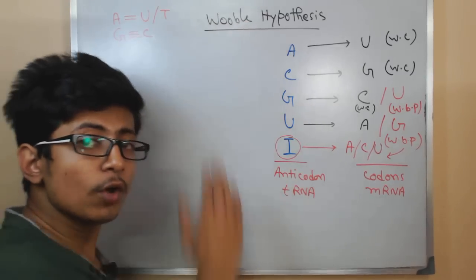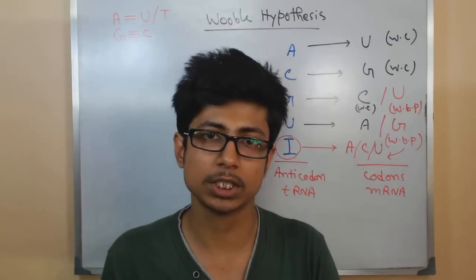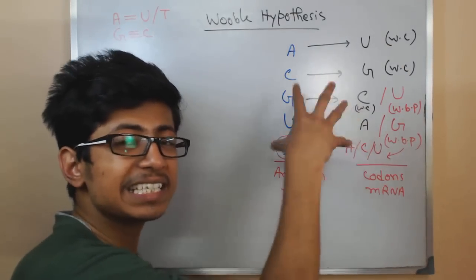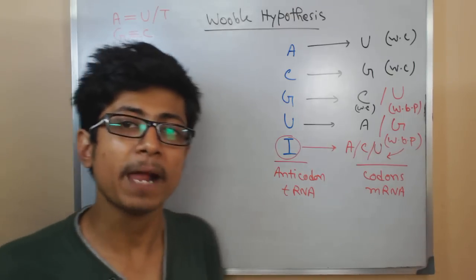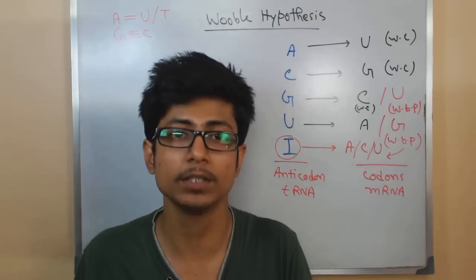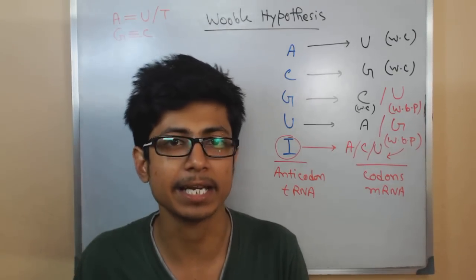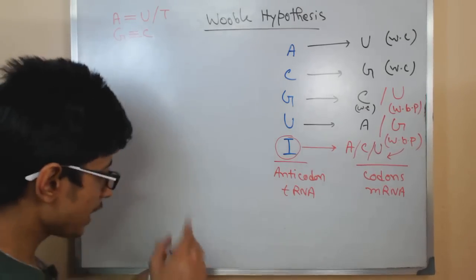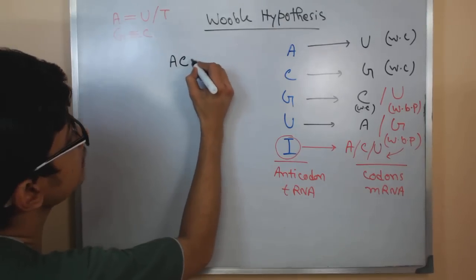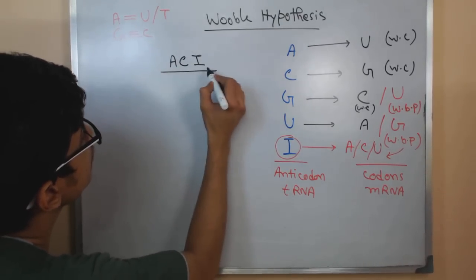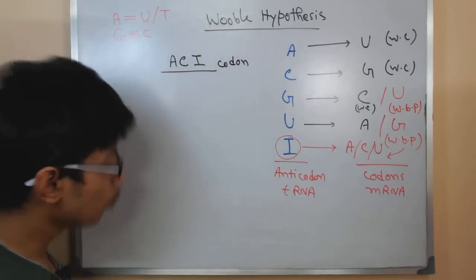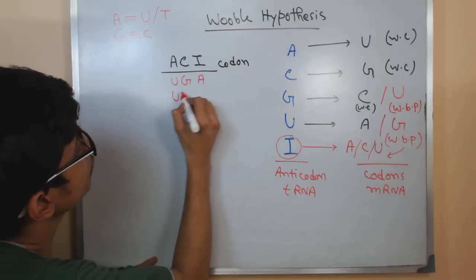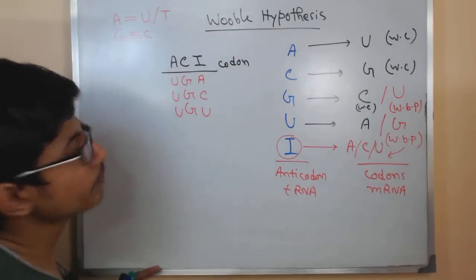Wobble hypothesis refers to the different variations of base pairing between different base analogs in RNA. This whole chart of allowed pairings is termed the wobble hypothesis — it describes what kinds of base pairing we can observe between mRNA and tRNA. The key idea is that if we have a codon containing inosine, that inosine can pair with U, G, or A from the anticodon.